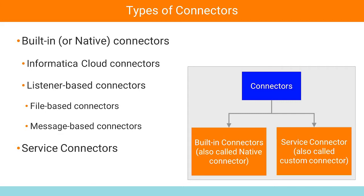Listener-based connectors are classified further as file-based connectors and message-based connectors. File-based connectors are designed to configure and monitor file-based systems for files or objects on a file system or any other type of storage. You can retrieve files, process the contents of files, or perform file operations like move or read file metadata. For example, FTP and Amazon S3 connectors are file-based connectors. Message-based connectors are designed to configure queue-based message brokers like ActiveMQ and JMS. For example, AMQP and Amazon SQS are message-based connectors.